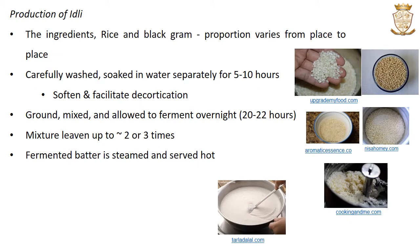Coming to the ingredients and production of Idli: the ingredients are rice and black gram. They are carefully washed and soaked in water separately for 5 to 10 hours. The soaking is done to soften them and to facilitate decortication. Then they are ground,